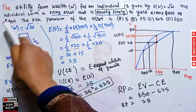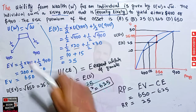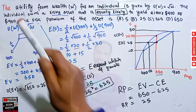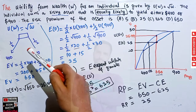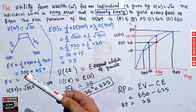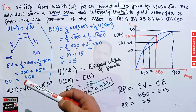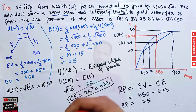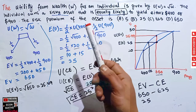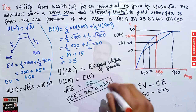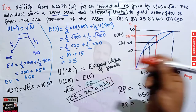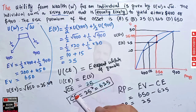We are given a utility function for a risk-averse person. How do we know this is a risk-averse person? Because we have the square root sign here. If you are wondering what is meant by risk aversion, risk loving, or risk indifference, I have made a video where I have explained it in simple language, which you can check on this channel.